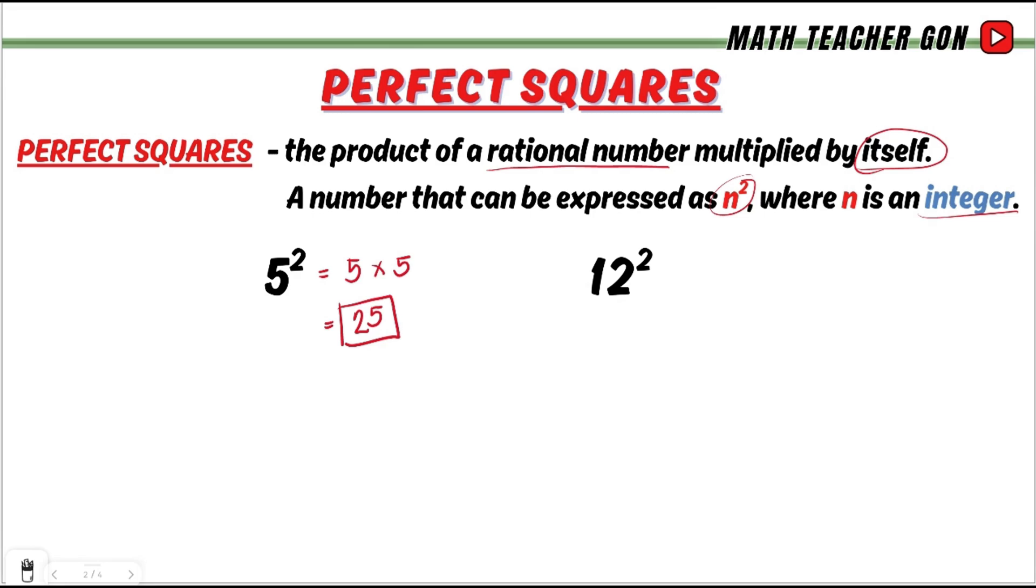Let's go for 12 squared. 12 squared is the same as 12 times 12. 12 times 12 is equal to 144, meaning 12 squared is equal to 144.